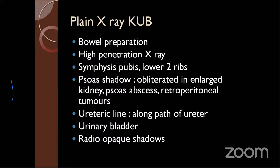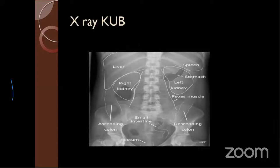Moving to investigations proper: plain X-ray KUB — the simplest investigation, which can be done even at the PHC level. Prerequisites include bowel preparation: the previous night, the patient should take a mild laxative to minimize gas in the bowel. High-penetrant X-rays should be used, and the film should cover from the 11th and 12th ribs down to the symphysis pubis.